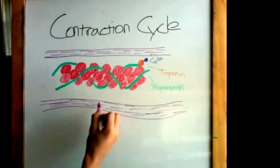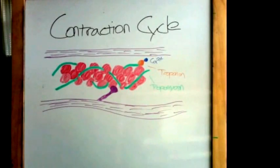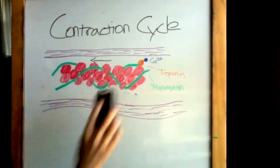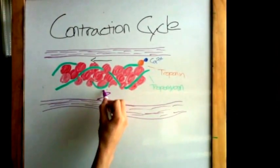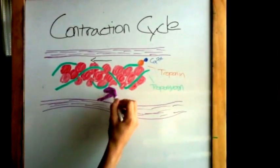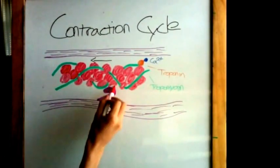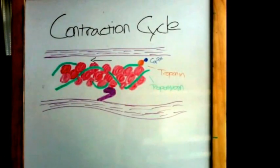Once the calcium ion binds to troponin, the tropomyosin is rotated, revealing the active sites. The energy that was stored in the resting state is released as the myosin head bends, producing a force and sliding the actin filament past the myosin filament. This process is called the power stroke.